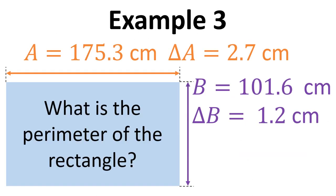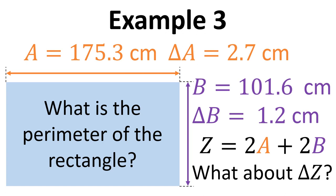Okay, final example then. What is the perimeter of the rectangle? And so we need to do Z equals 2A plus 2B. And also, again, we want to know what is the uncertainty in that value.